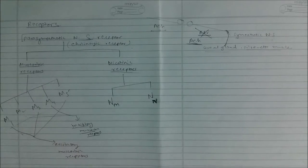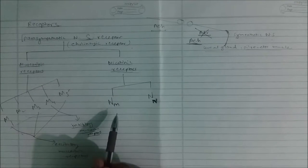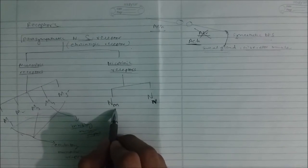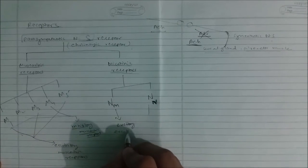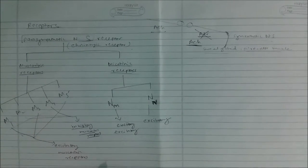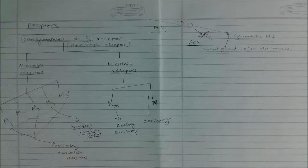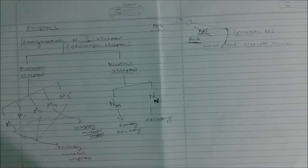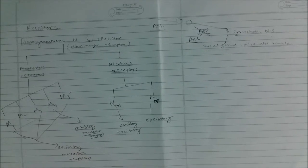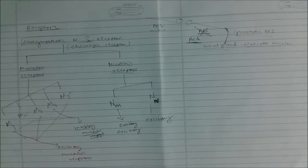Both nicotinic receptors — Nm and Nn — are excitatory. Now let's talk about the characteristics of these important subtypes.